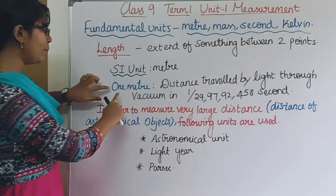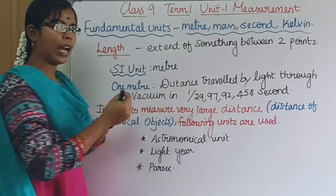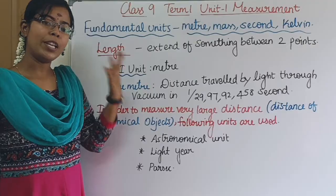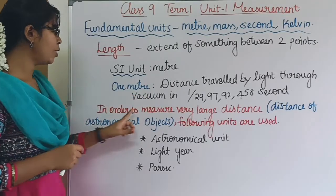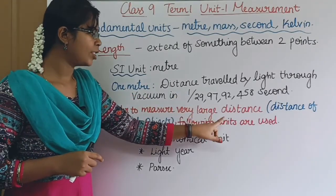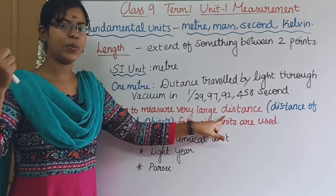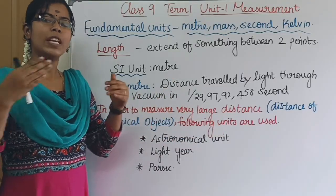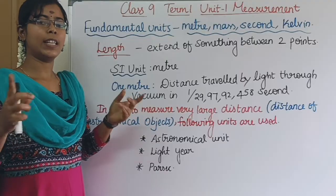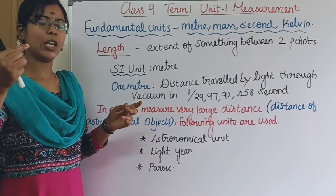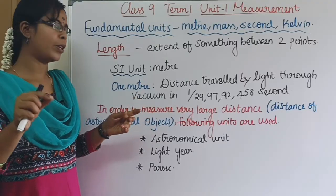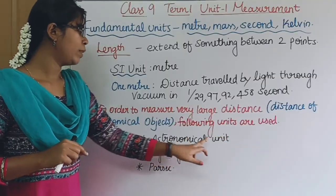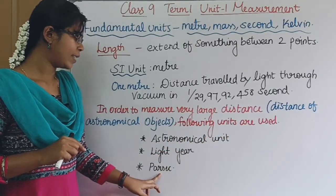Okay, so 1 meter — we have the unit of length. Now, to measure very large distances such as to the Moon, Sun, or Earth, we have to use the following units: Astronomical Unit, Light Year, and Parsec.